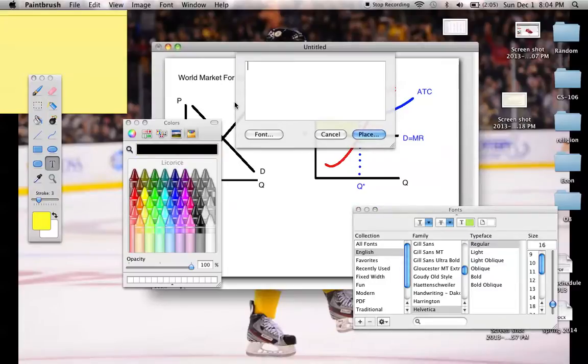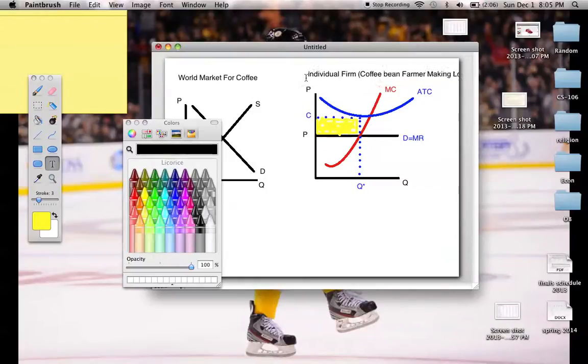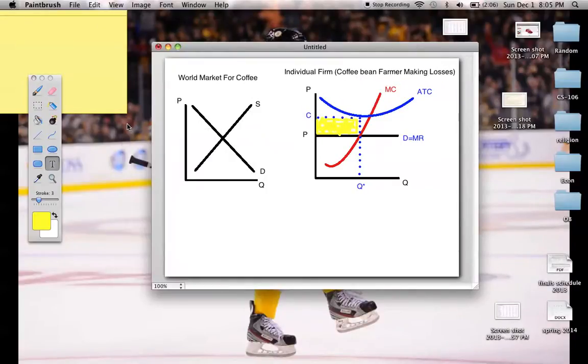Call it the individual firm, coffee bean farmer, making losses. And that is it for the price taker. There we go.